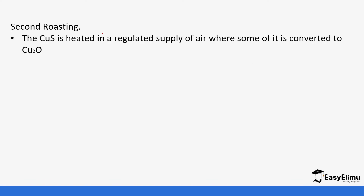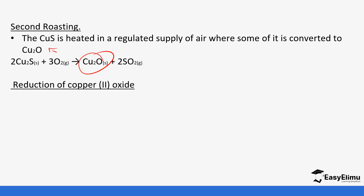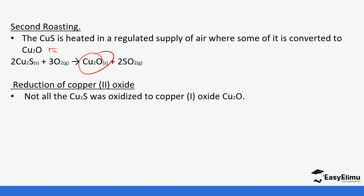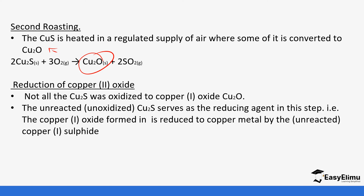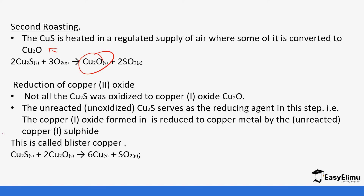In the second roasting, the copper sulfide is roasted in air to form copper(I) oxide and sulfur dioxide — a lot of sulfur dioxide is given off in this reaction. Not all the copper sulfide is oxidized to copper(I) oxide, so the unreacted copper sulfide acts as a reducing agent, just as we saw with lead. The copper(I) oxide formed is reduced to copper metal by reacting with copper(I) sulfide. This is now referred to as blister copper. The excess copper sulfide reacts with the copper(I) oxide to give copper and sulfur dioxide.